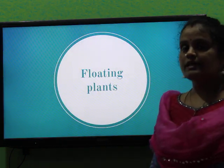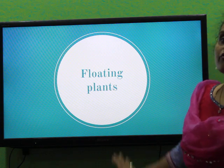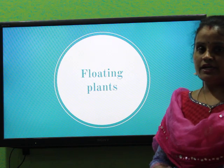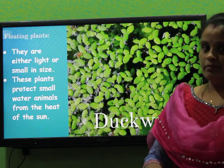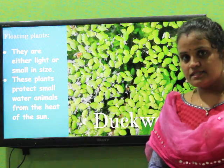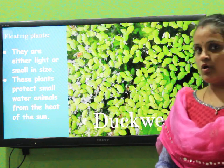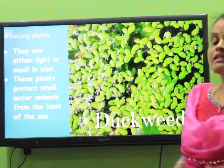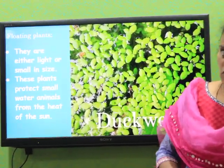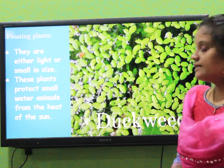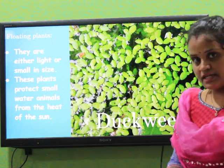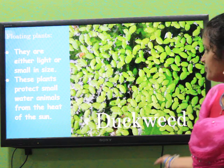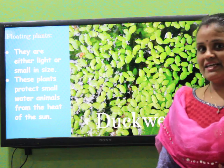Children, we are going to learn in detail about floating plants. Floating — when you say floating, either the object will be light in weight or small in size. Floating plants means the plants which are floating in water are called floating plants. They are very small in size and light in weight. Here we have a picture of duckweed.